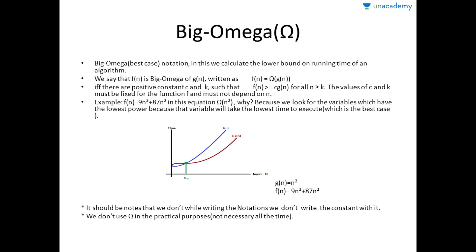Now let's talk about Big Omega, which is also known as the best case. For the formal definition, in this we calculate the lower bound on the running time of the algorithm. Here, lower bound means the lowest degree of the variable. We can say that F(n) is Big Omega of G(n), written as F(n) = Ω(G(n)). If we remove the Omega sign, we get F(n) ≥ C·G(n), where C is a constant whose value is greater than zero. Taking the same example as for Big O — F(n) = 9n³ + 87n² — the Big Omega is n² because we look for the lower bound.